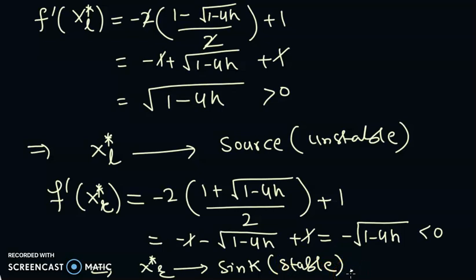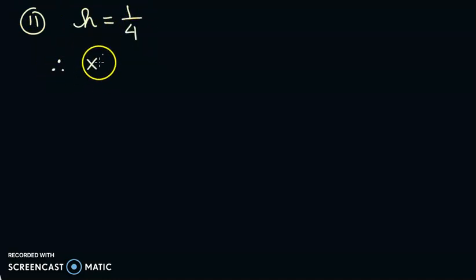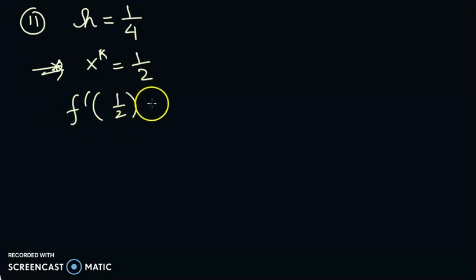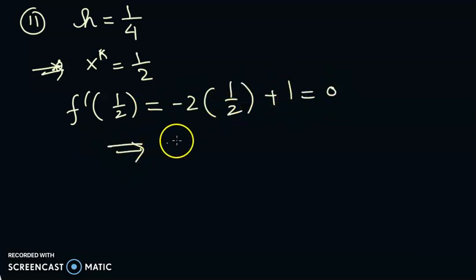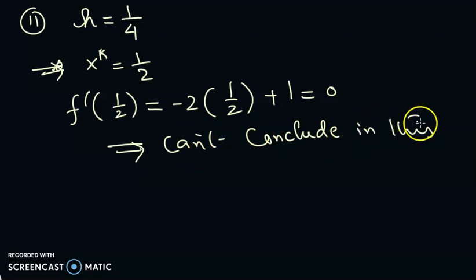For Case 2, when h = 1/4, we have only one equilibrium point x* = 1/2. Computing f'(1/2) = -2·(1/2) + 1 = 0, so we cannot conclude stability from this criterion alone. We need more information and can analyze it graphically.